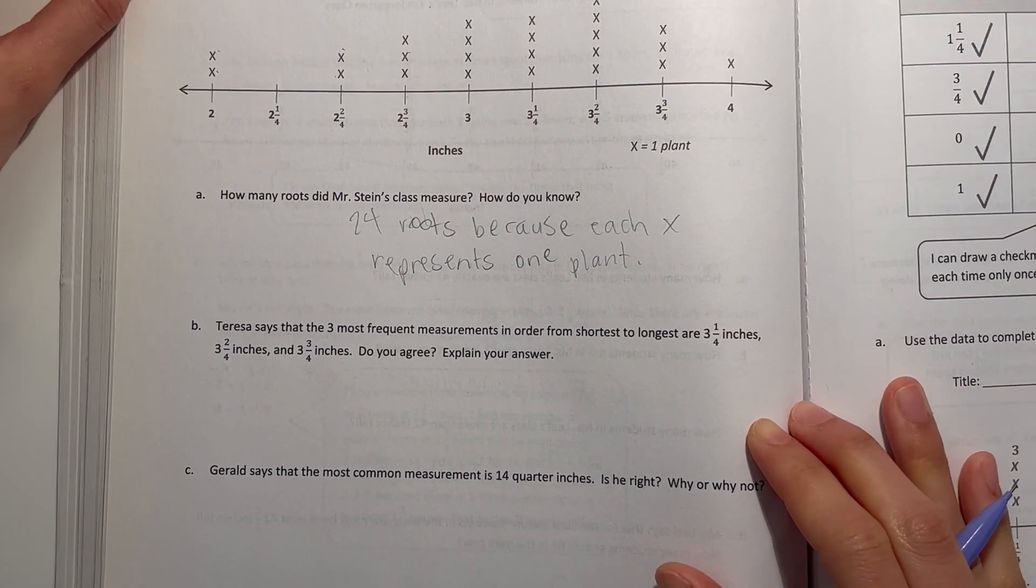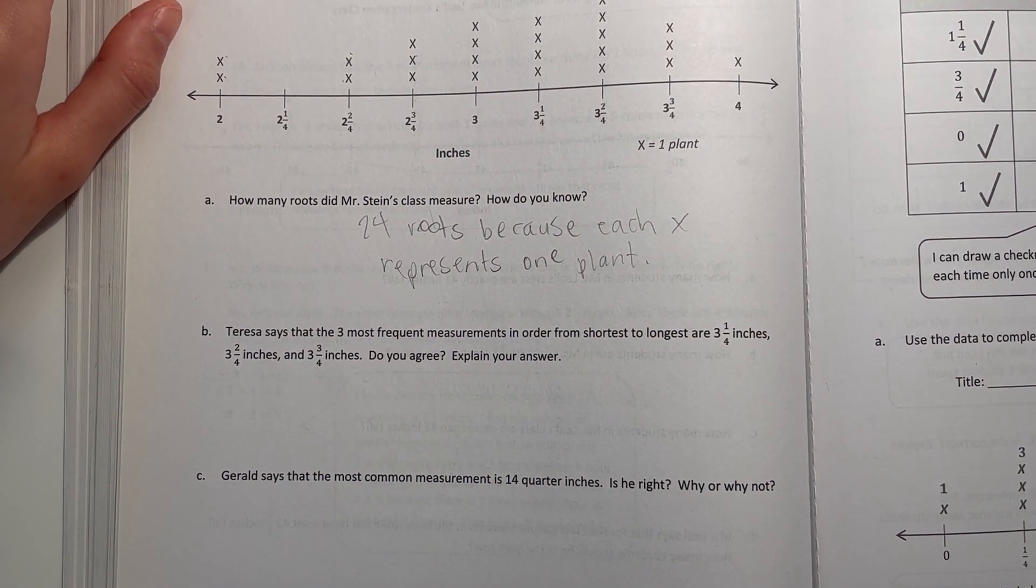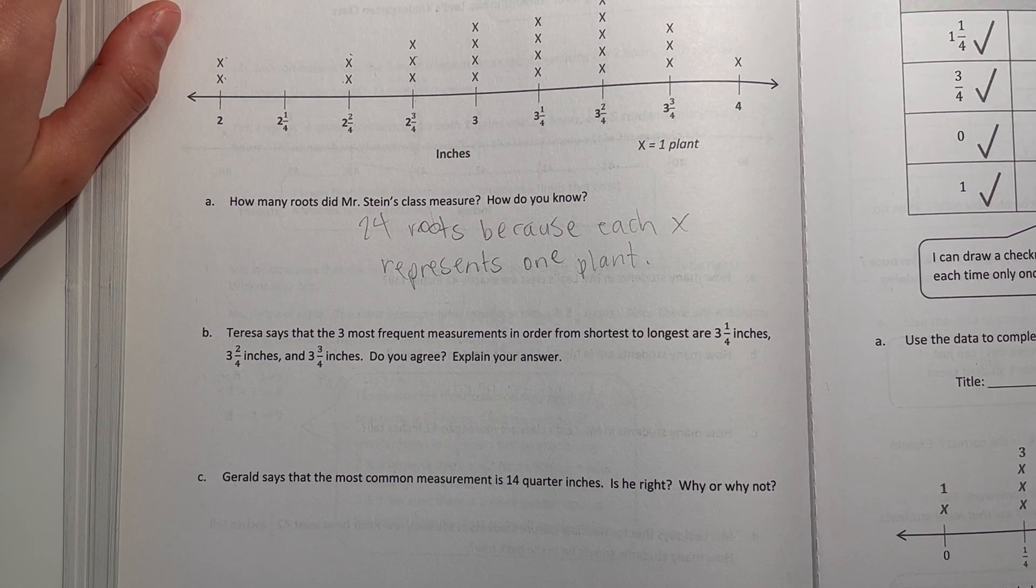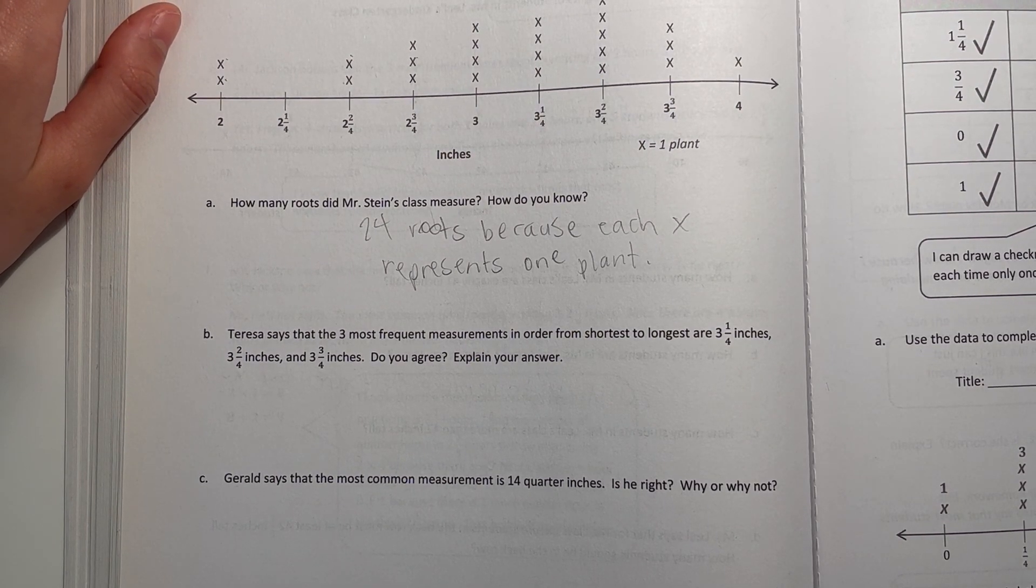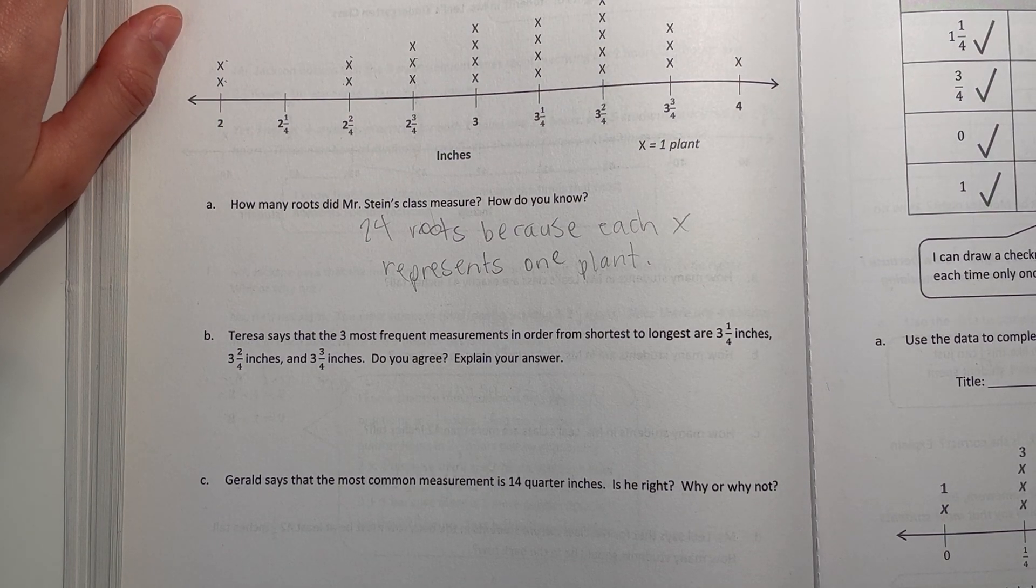Now B, Teresa says that the three most frequent measurements in order from shortest to longest are 3 and 1 fourth, 3 and 2 fourths, and 3 and 3 fourths inches. Do you agree? Explain your answer.